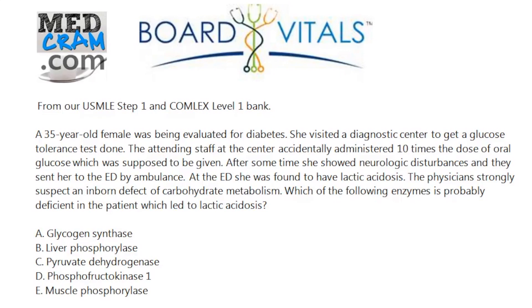Your five choices are: A, glycogen synthase; B, liver phosphorylase; C, pyruvate dehydrogenase; D, phosphofructokinase 1; and E, muscle phosphorylase.